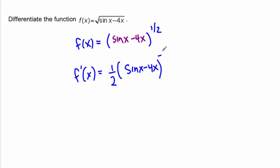subtract 1, so that's minus half, and then multiply it by the derivative of the inside. So the derivative of sine, make sure you have parentheses because we have two terms here. So cosine x, and the derivative of minus 4x is minus 4.